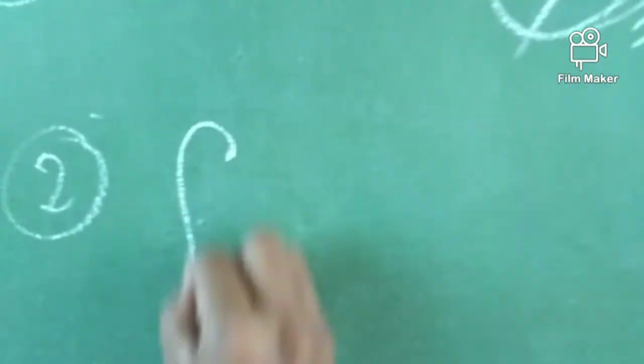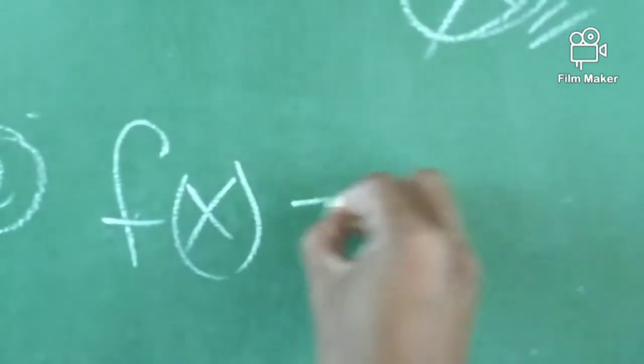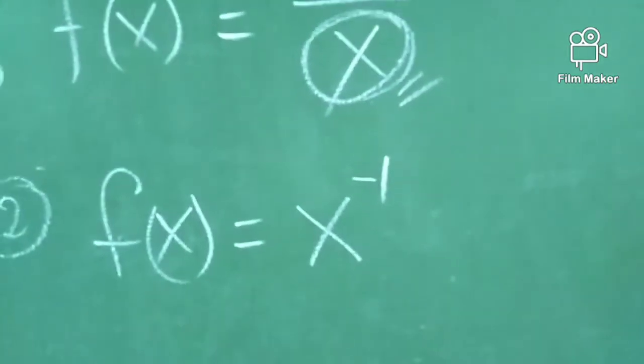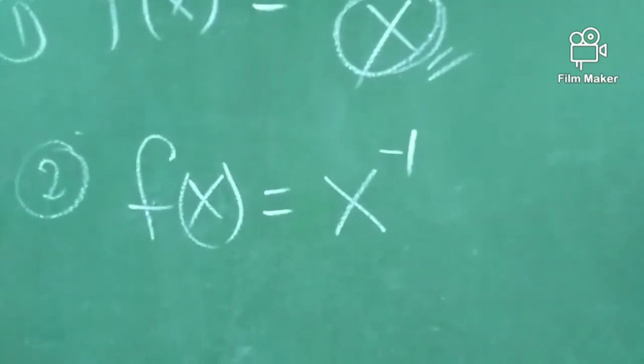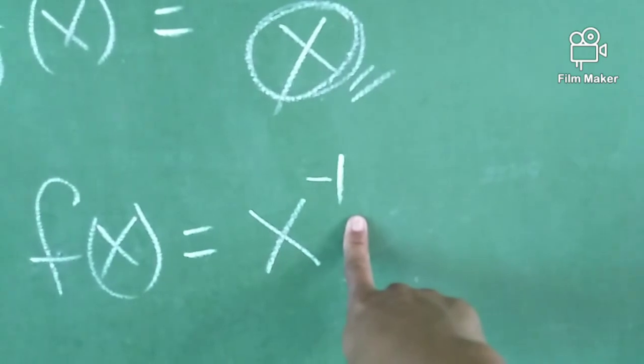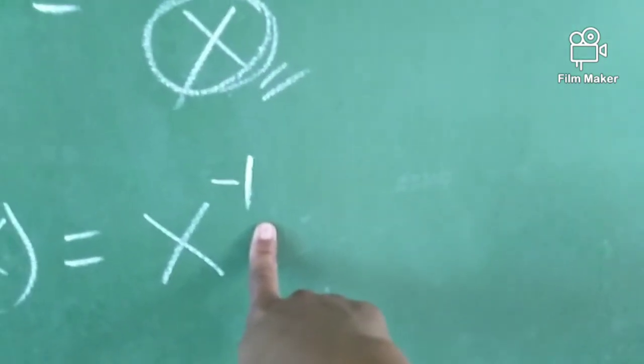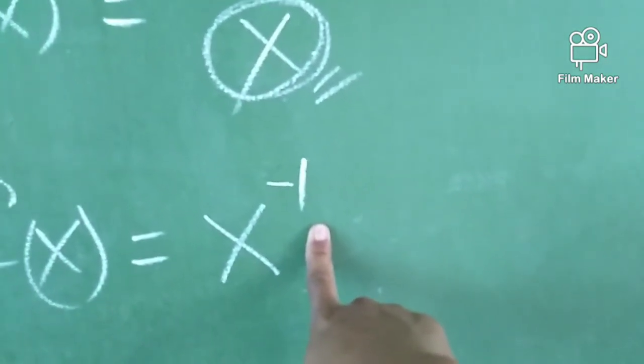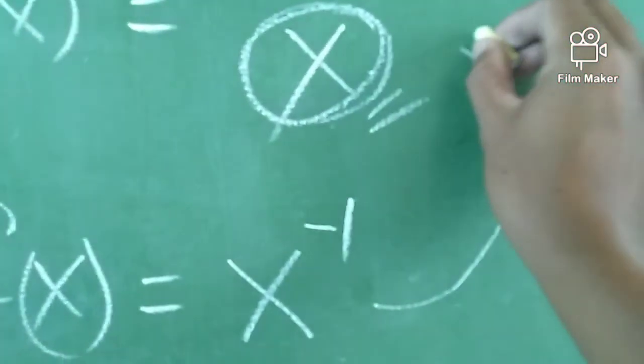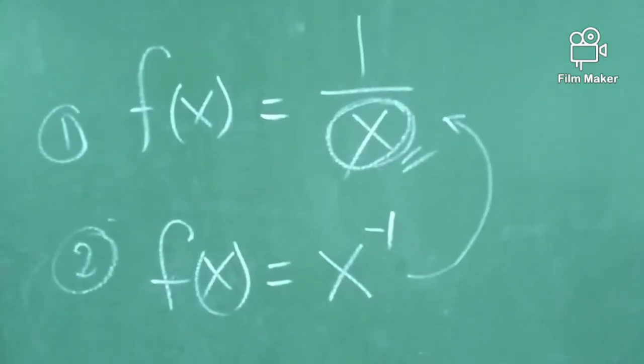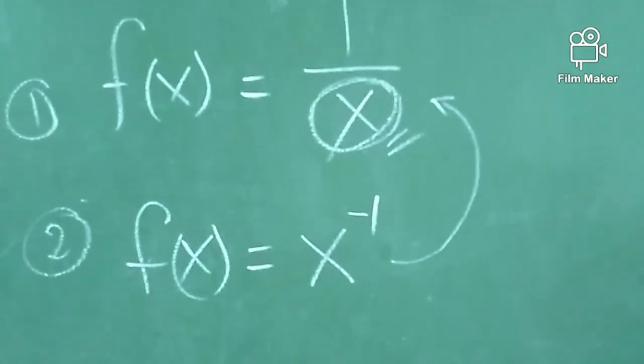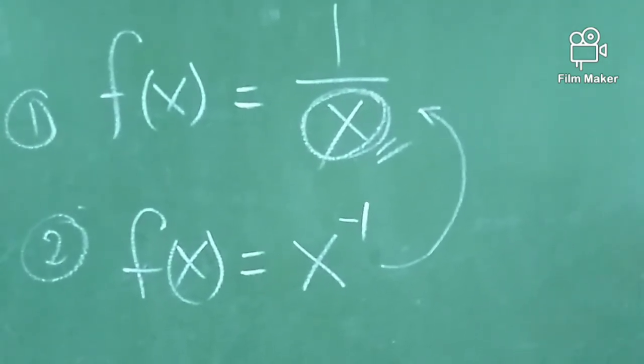Second, this is 1 and this is 2. So, function of x, in another case, we'll also see this. We have function of x equals x raised to negative 1. What does this mean? This is just the same as the first one, the first example. Why? Refresh your knowledge on the laws of exponents.